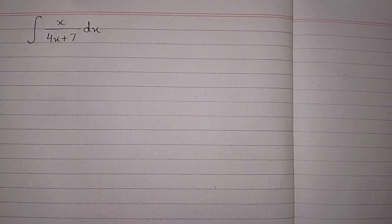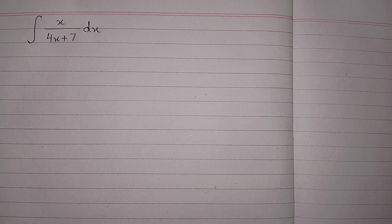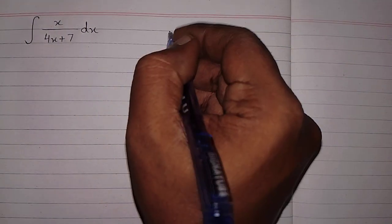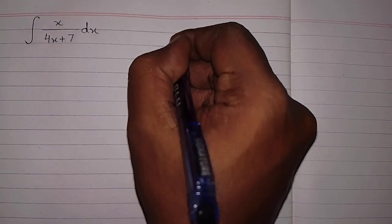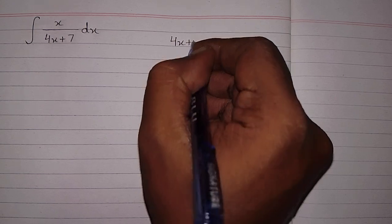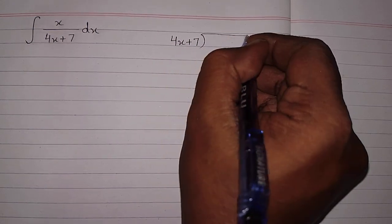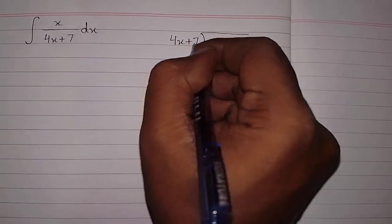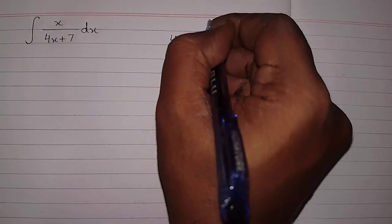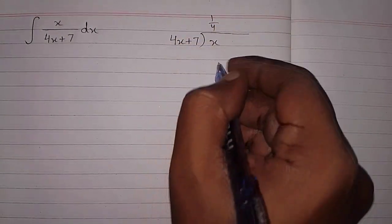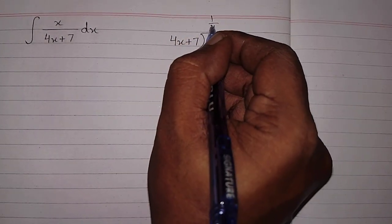In this video we will find the solution of x upon 4x plus 7. So first of all we will divide this fraction. We will multiply the divisor 4x plus 7 by 1 upon 4.